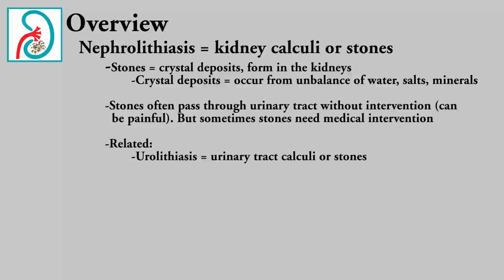Stones are crystal deposits that form in the kidneys, and they occur due to an imbalance of water, salts, and minerals. Often a stone will pass through the urinary tract by itself, although this can be painful, but sometimes stones will need medical intervention. Related to nephrolithiasis is urolithiasis, which means that a stone has moved from the kidney to somewhere else in the urinary tract, but it's still the same stone.